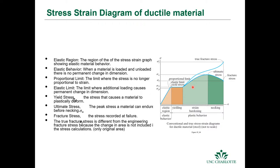In strain hardening, if you remove the load you come down with the same slope according to the Young's modulus of the material. We call it strain hardening because you can then apply a higher load before getting another change in geometry. In one case it took stress sigma_y to cause a permanent change; in the strain hardening region you can go all the way up to a higher stress and back down without a permanent change. We continue until we reach the ultimate stress, which is usually what's recorded for failure criteria.